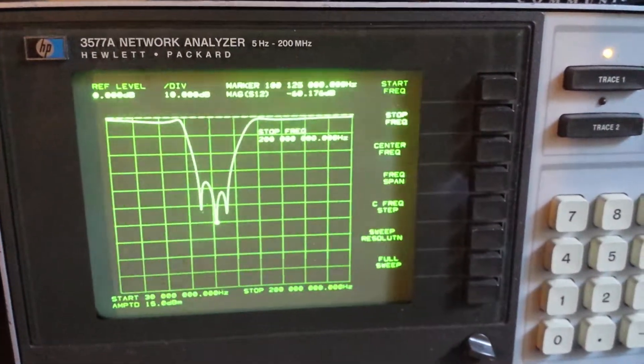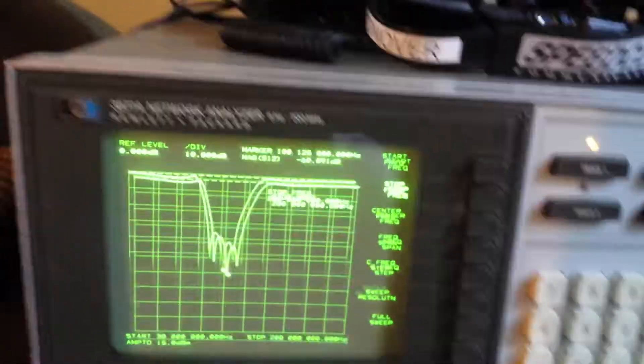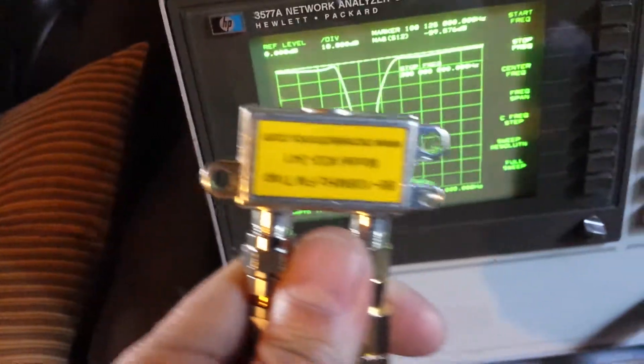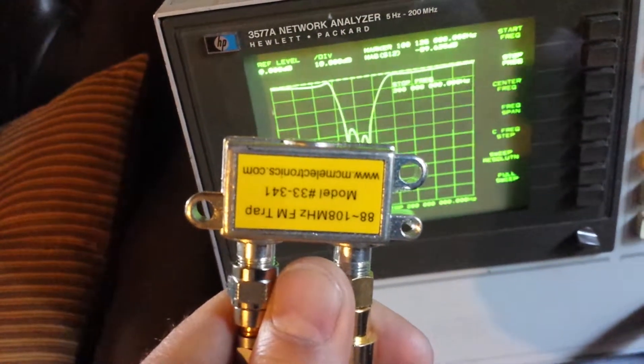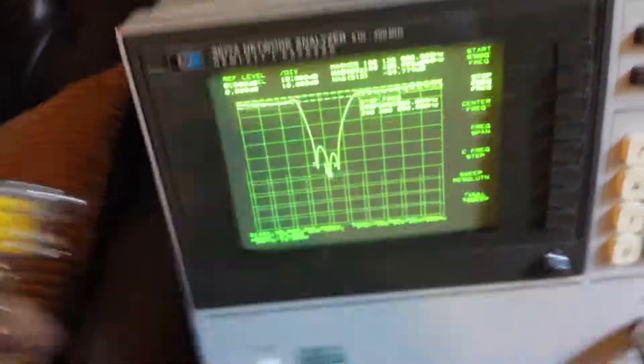There you go. That's the MCM Electronics FM broadcast band filter. 88 to 108 MHz FM trap.